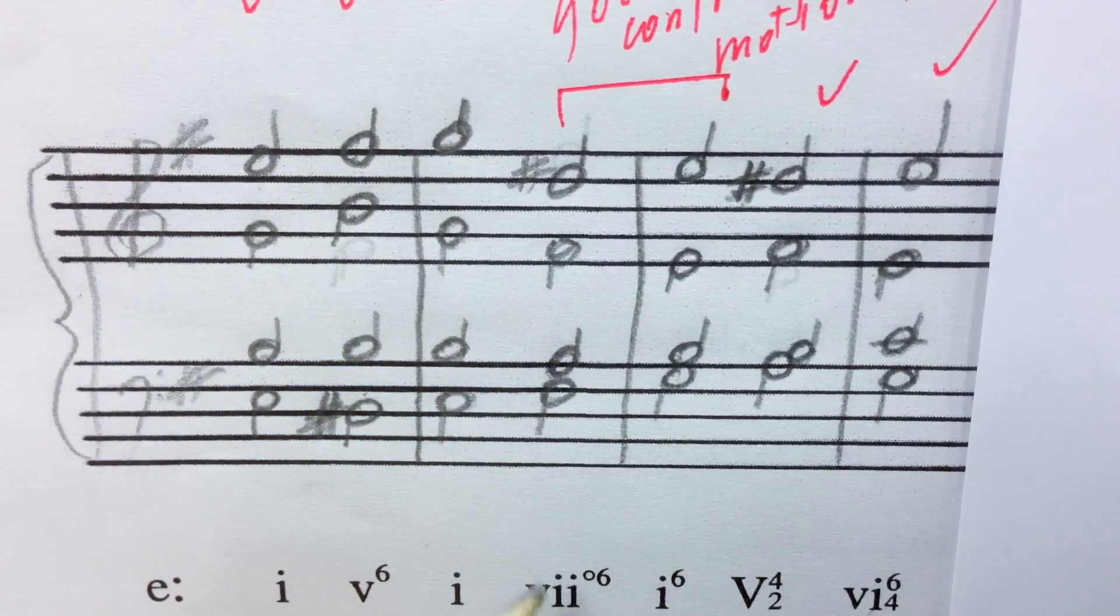A 7-6 chord is a chord that has the notes 7, 2, and 4, which would be in the key of E minor, D sharp, F sharp, A.